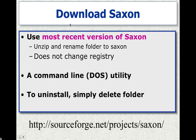Next you're going to need Saxon, so you can go to sourceforge.net/projects/Saxon and you'll be able to download the most recent version. Unzip and rename the folder to Saxon — when they save a version of Saxon they have a version number built into the name, so you can cut all that off and just call your folder Saxon; it makes it much easier to access. Saxon is just a standalone folder — it works as a Java jar file and it doesn't change the Windows registry at all. This is a command line utility.